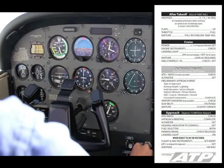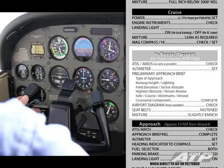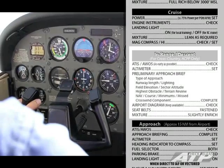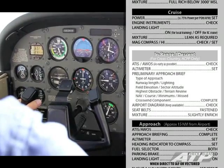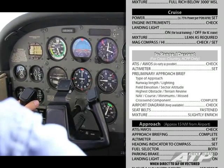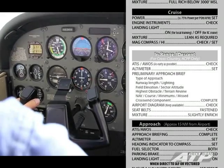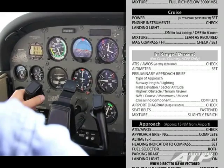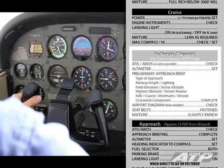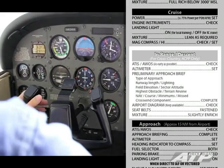Complete the in-range descent checklist as soon as ATIS is received: ATIS check, altimeter set, preliminary approach brief. Plan on an RNAV GPS approach to runway 36R.